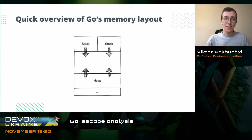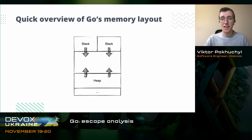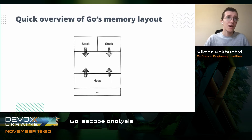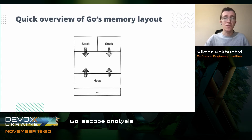So, Memory layout. In Go we have different segments of memory. Like in Java, we have heap and we have stack. We have only one heap for the whole application and we have a stack per each goroutine. Apart from that, we also have fixed-size segments of memory which store our constants, application code, and other stuff, but that's not important for us. The most important thing is that we have multiple stacks and only one heap.